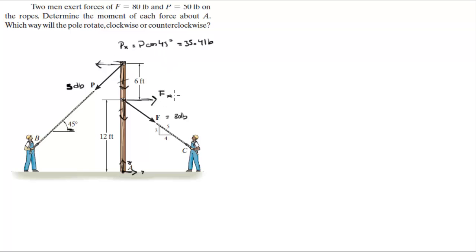The X component of F is equal to the magnitude of F times 4 over 5, because we're given the triangle right here that makes it easy for us, so it comes out to be 64 pounds.